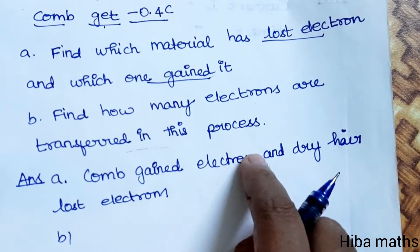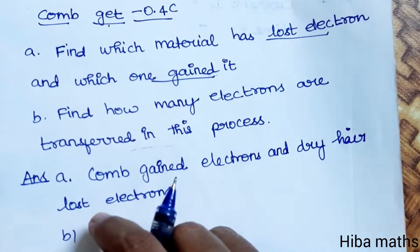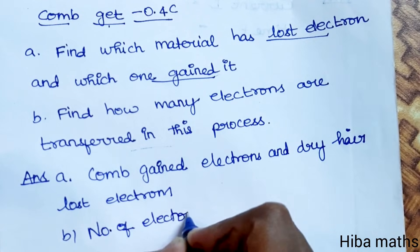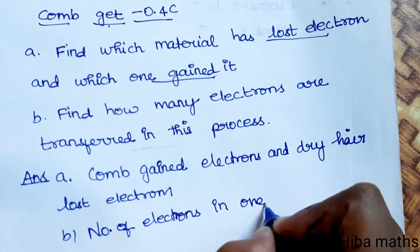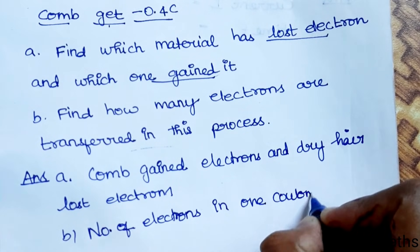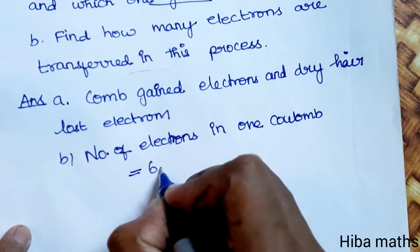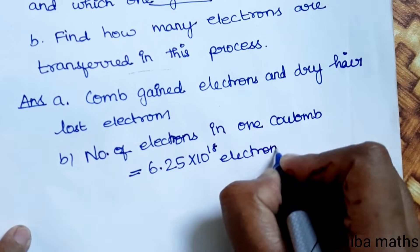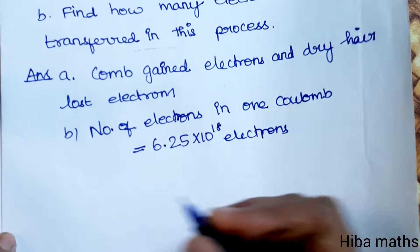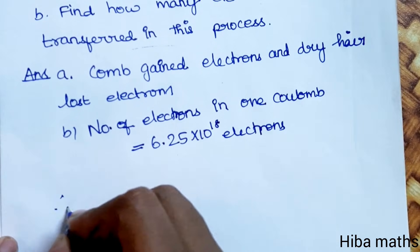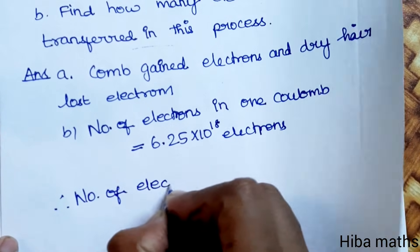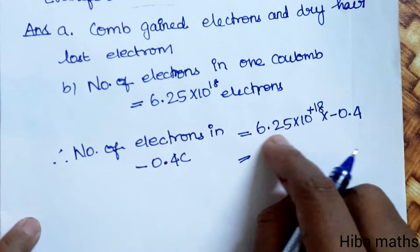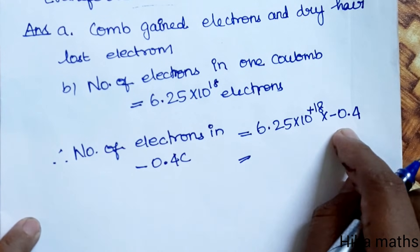How many electrons are transferred in this process? Number of electrons in one coulomb is equal to 6.25 × 10^18. Therefore, number of electrons in minus 0.4 C equals 6.25 × 10^18 × 0.4.